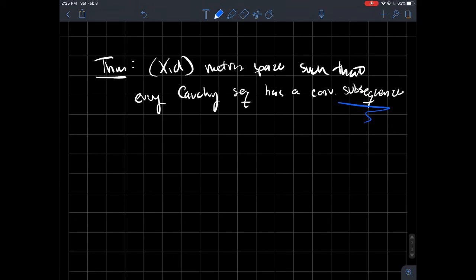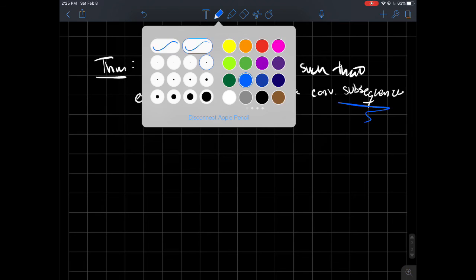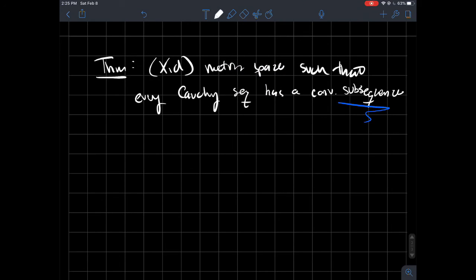So what am I saying? If the subsequence has a limit, if it converges, then in fact, if you could say that much about every Cauchy sequence in your metric space, then that's enough for your metric space to be complete. So has a convergent subsequence, then (X, d) is complete.